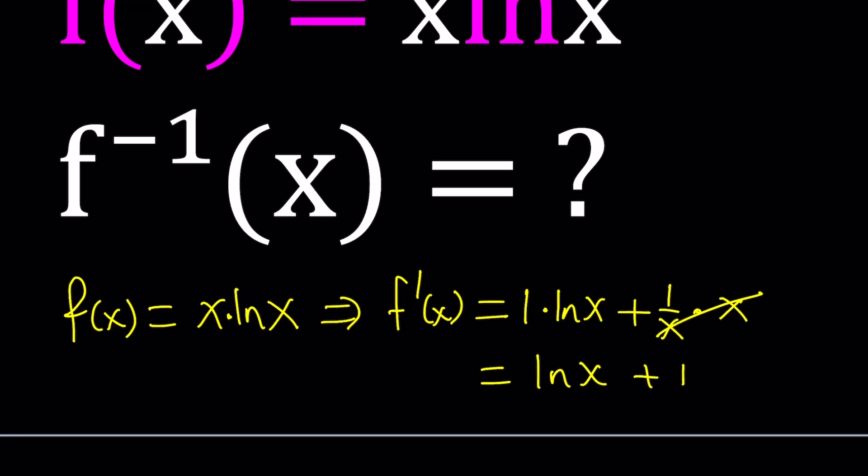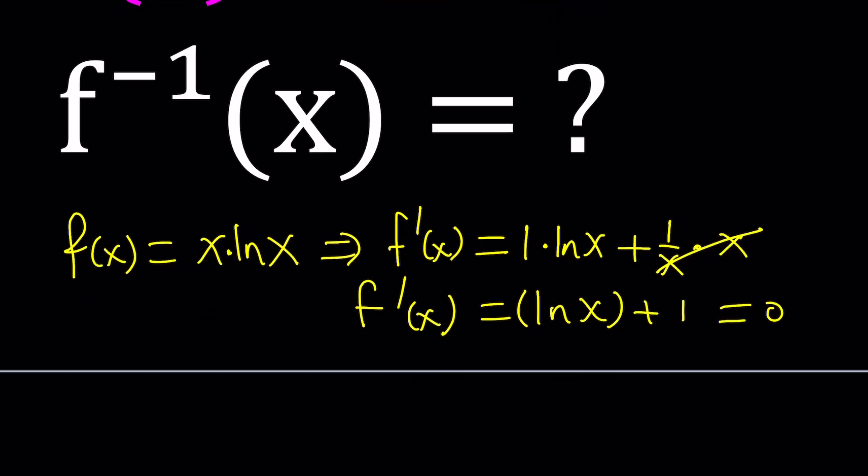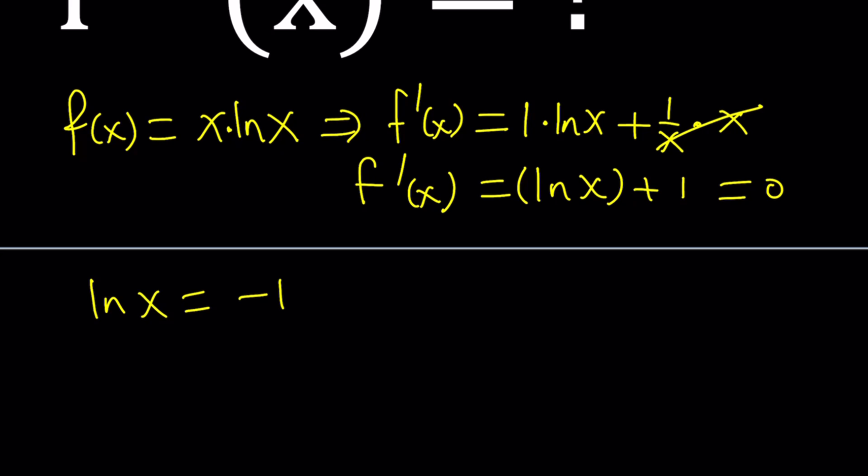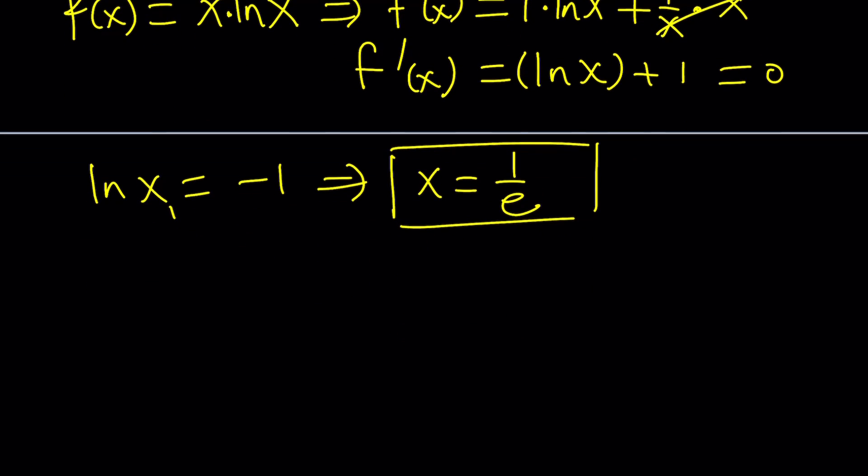A lot of times we're going to write it as 1 plus ln x because it's less confusing. Make sure that 1 is not logged. Sometimes you can write it like this, but it's always better to write it as 1 plus ln x. And from here, we want to set the derivative equal to 0 to find the critical points. This gives us ln x equals negative 1, which implies x equals e to the power negative 1, equal to 1 over e, the reciprocal of e. So at x equals 1 over e, we have a critical point. And notice that x needs to be positive because of the domain of the natural log function.